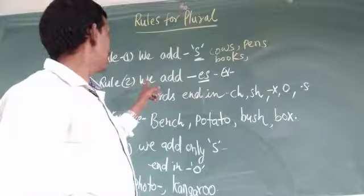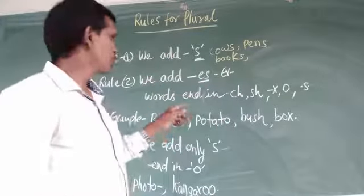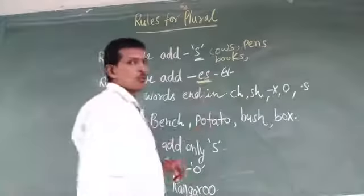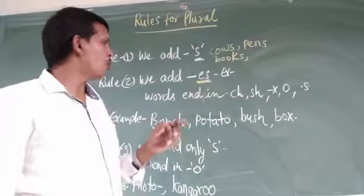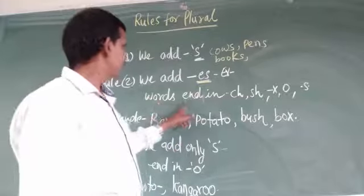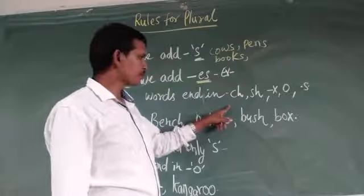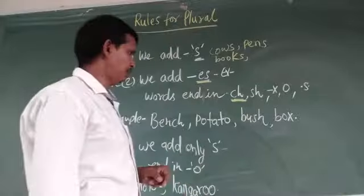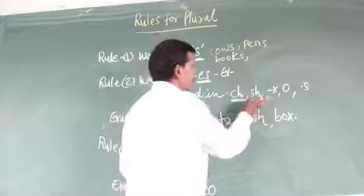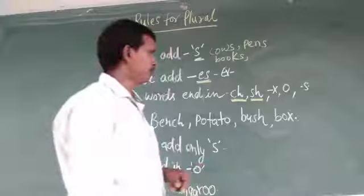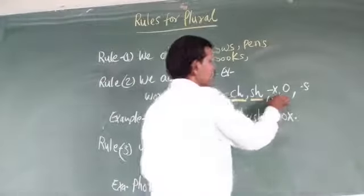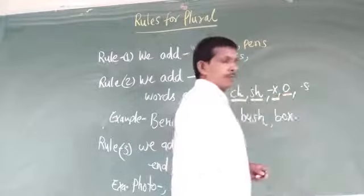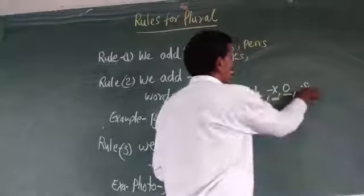Now there is another rule. We add 'es'. Generally, words ending in ch, sh, x, o, and s.